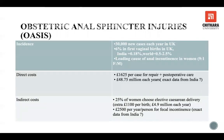The incidence of these types of tears or injuries are known as obstetric anal sphincter injuries, or OASIS. Incidence is 30,000 new cases every year in the UK, about 6% in first vaginal births, and in India it's about 0.18%. Worldwide it's about 0.5% to 2.5%, and it is the leading cause of anal incontinence in women.